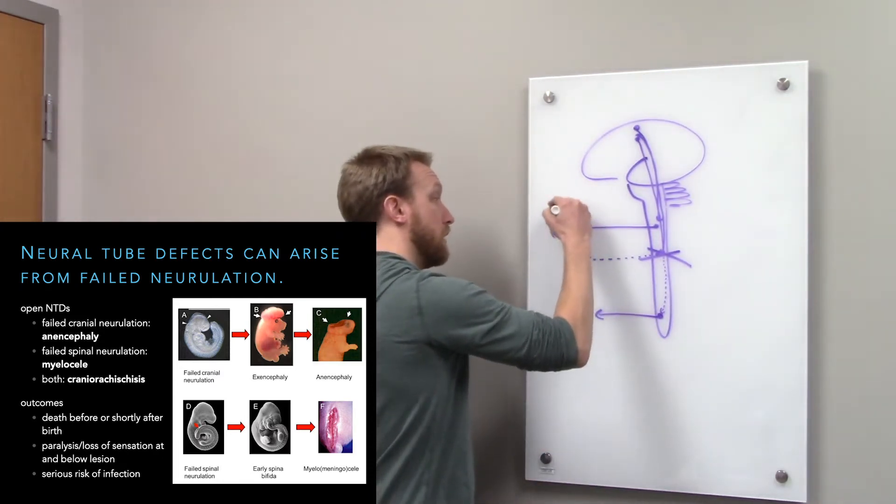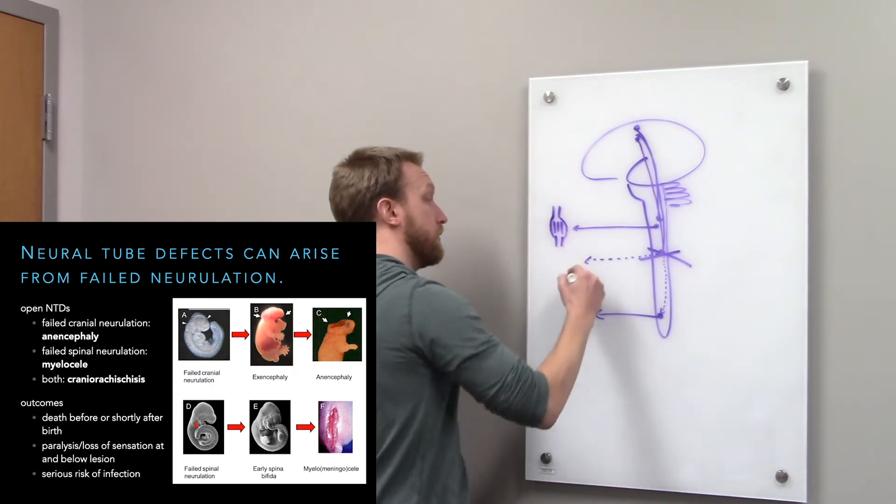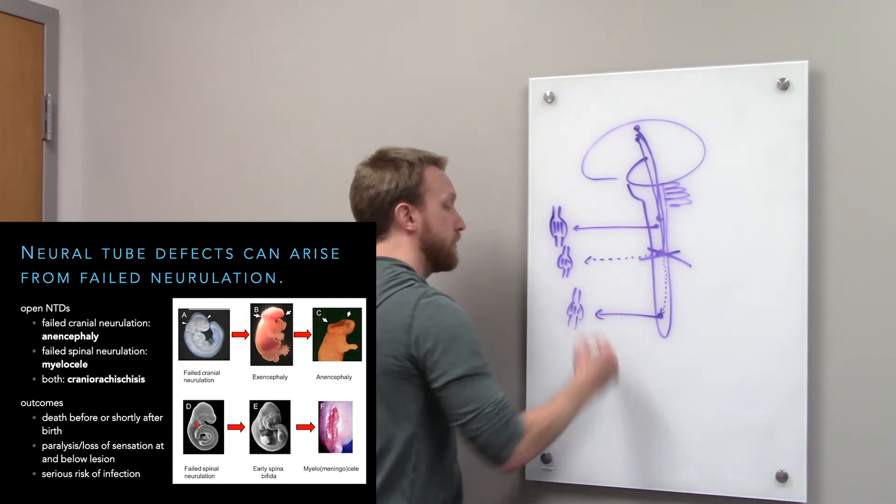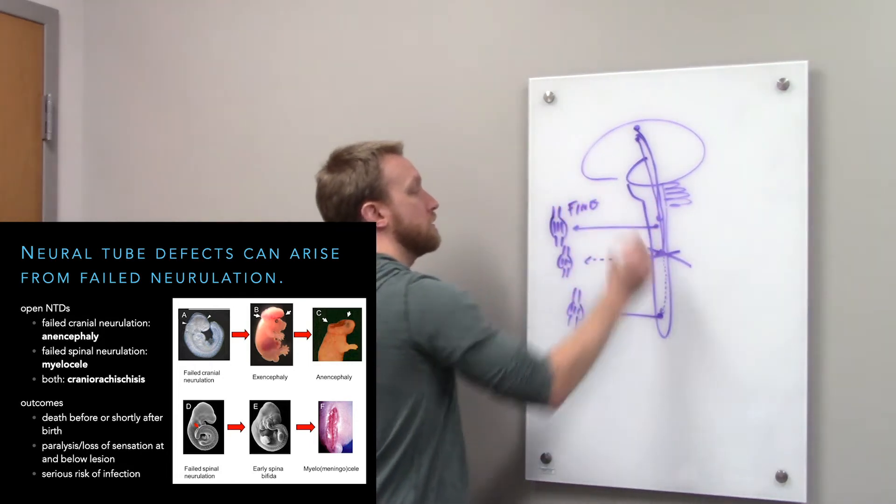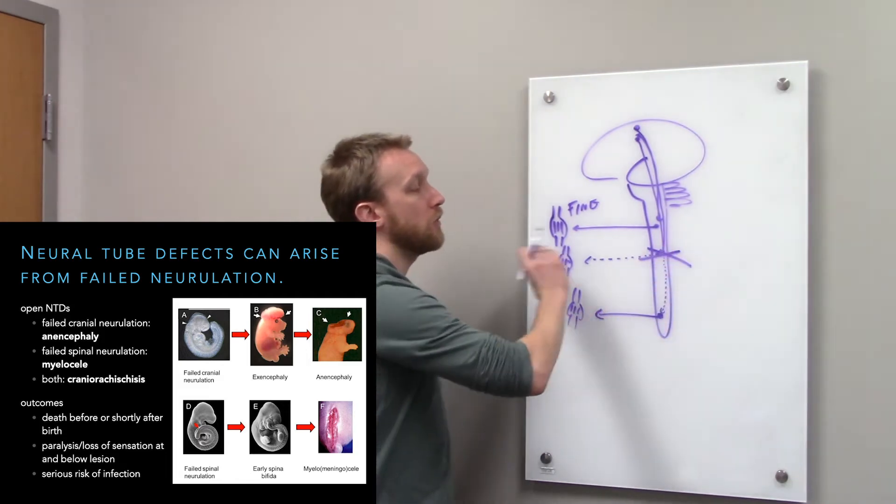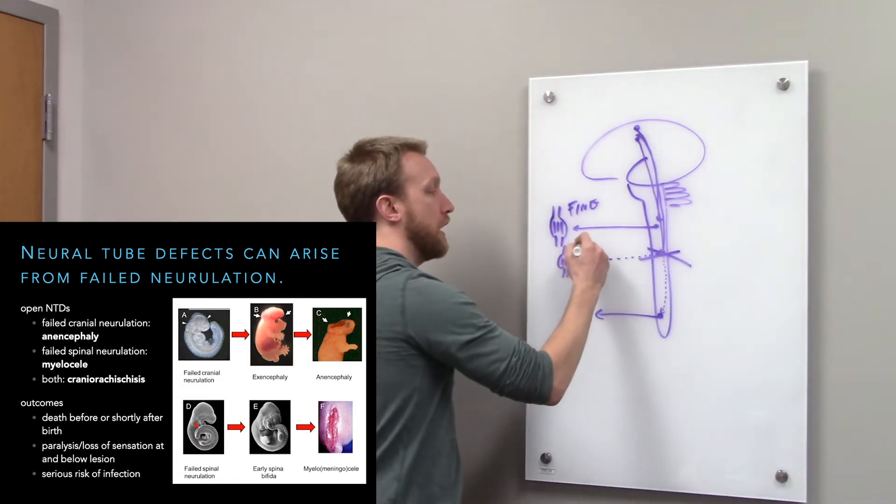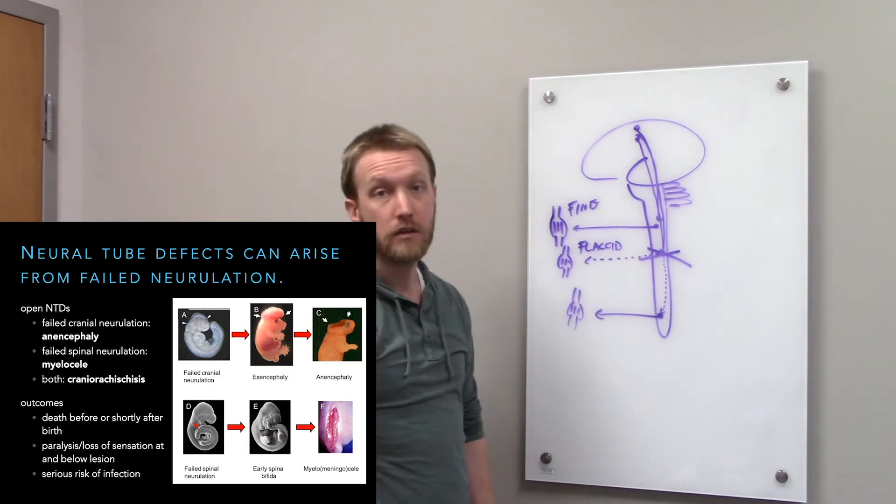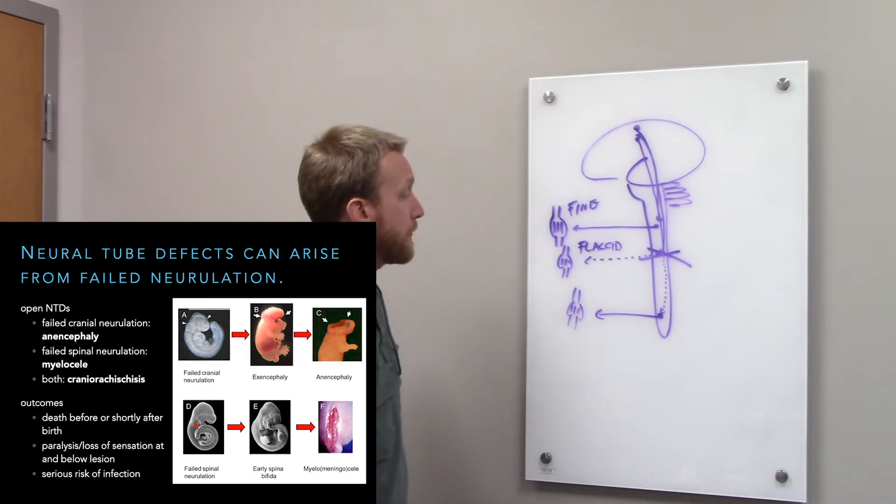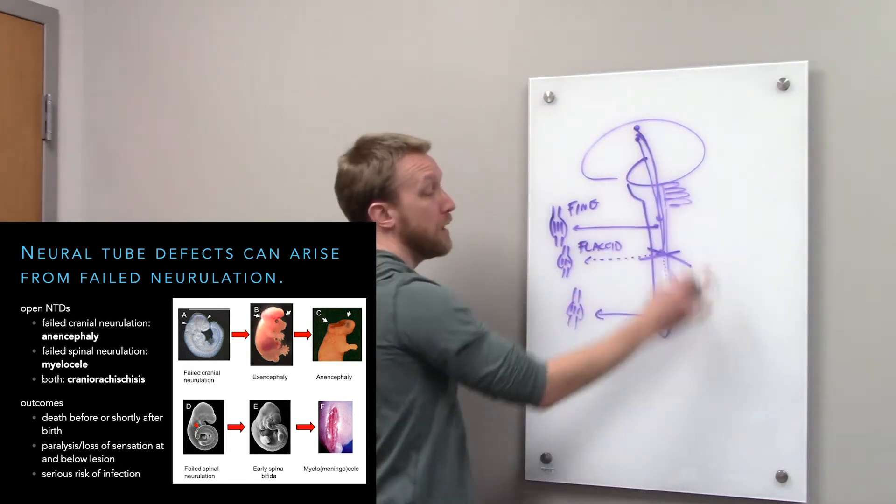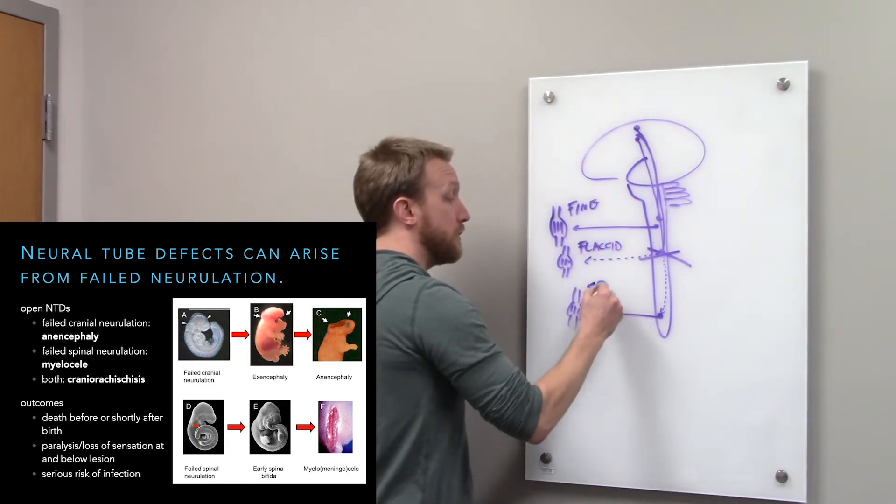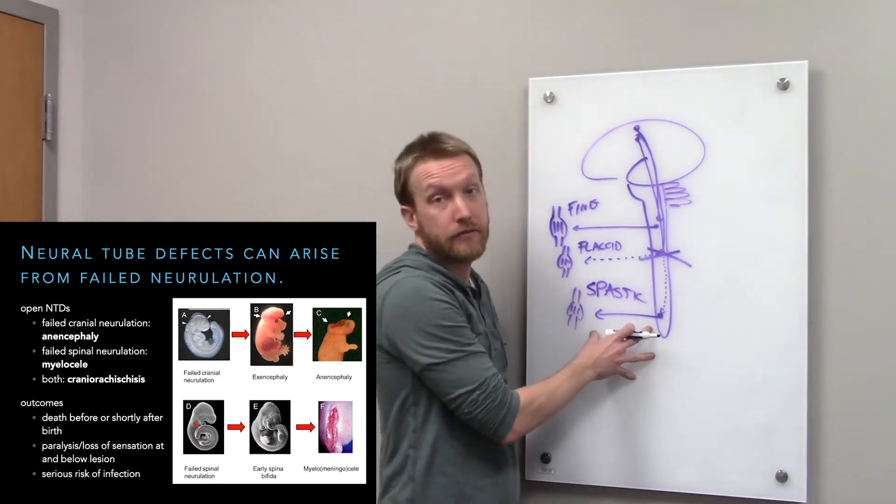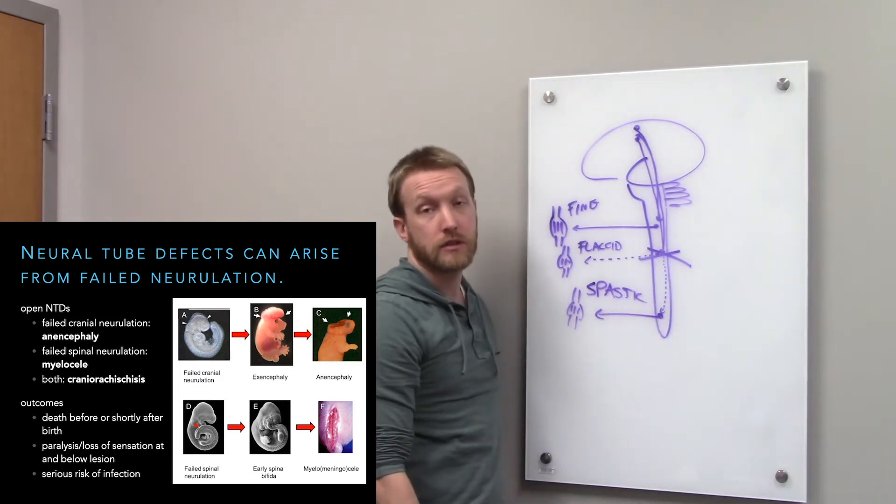When we think about how we affect muscle activity above the level, everything's fine. At the level of lesion, we destroy the neurons, so we have flaccid paralysis because we killed the lower motor neuron. There's no way we can communicate with the muscle anymore. If we have damage below, we can have spastic paralysis. The lower motor neuron is still alive, it just doesn't have an upper motor neuron to listen to.